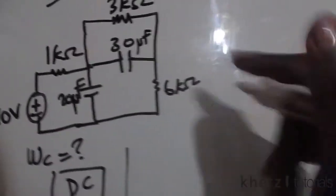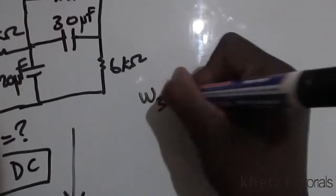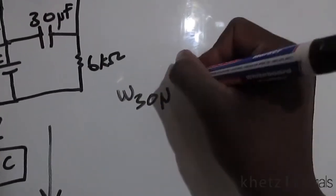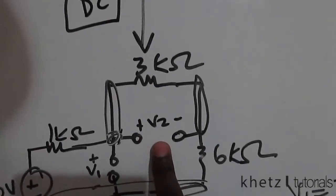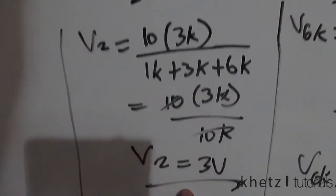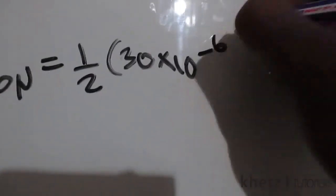The energy associated with the 30 microfarad capacitor, which is associated with v2—we said v2 equals 3 volts—is ½CV². So it's ½ times 30 times 10 to the minus 6, this is the C part, and the V is 3 volts, so 3 squared.